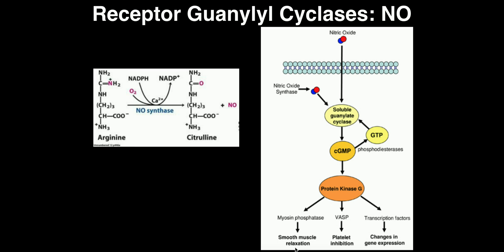Receptor guanylyl cyclases have important clinical applications. Another molecule that inhibits cyclic GMP phosphodiesterase is horny goat weed, a natural supplement that can be used in place of Viagra. Since Viagra requires a prescription, horny goat weed can actually be purchased at a drugstore.